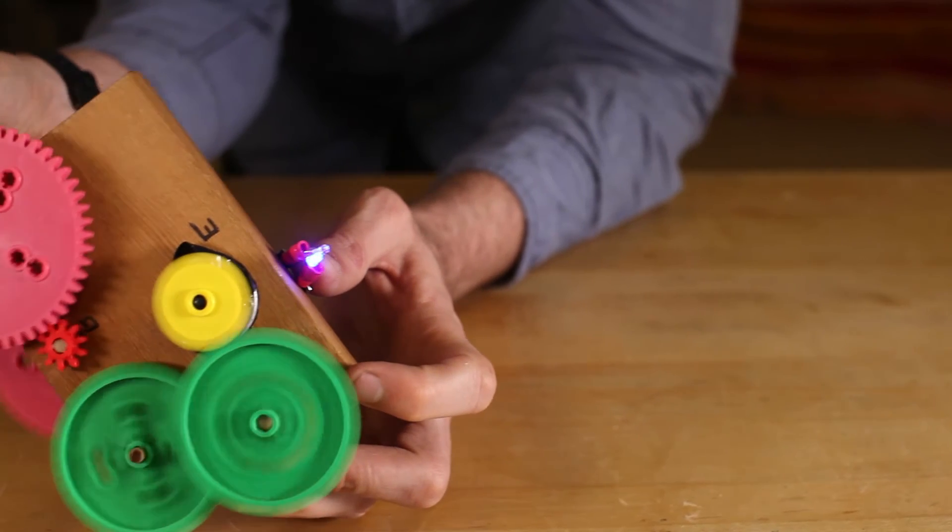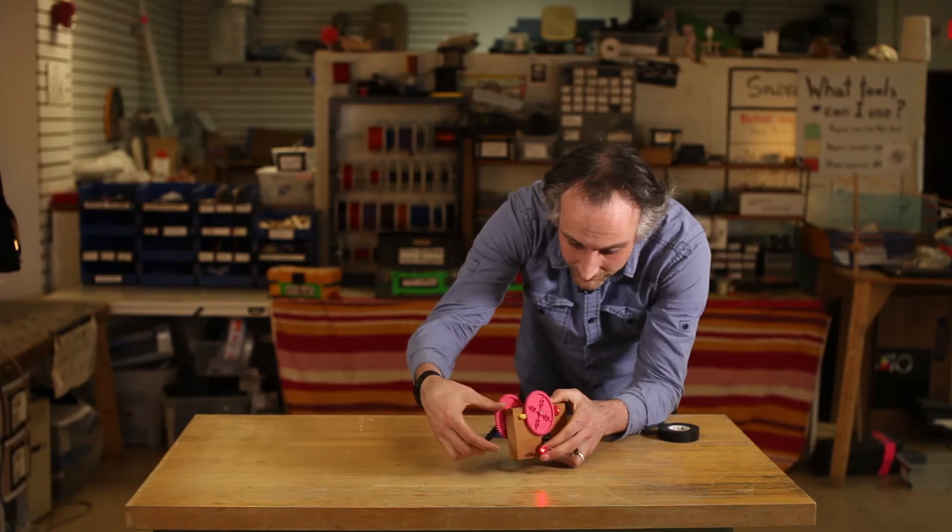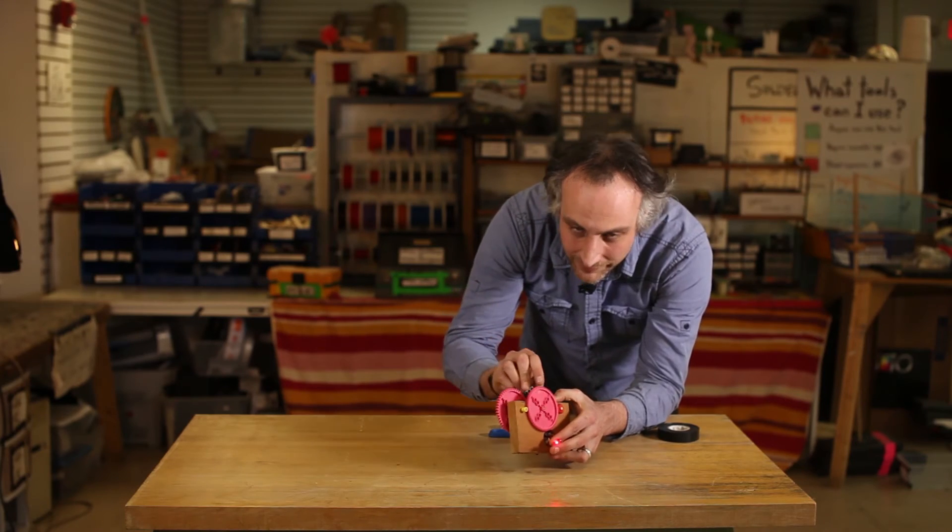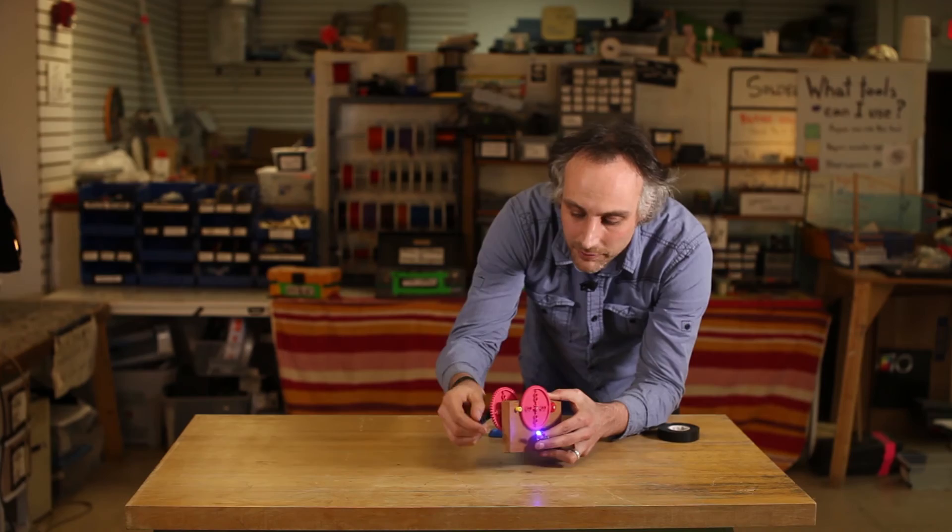And if you crank it in one direction, one light turns on, and if you crank it in the other direction, the other light turns on, because we have two LEDs that are wired up opposite each other.